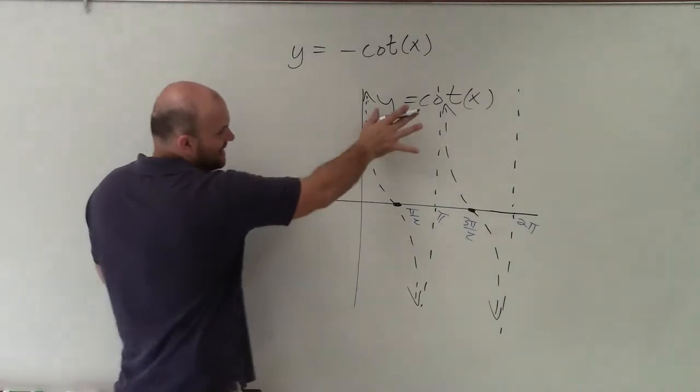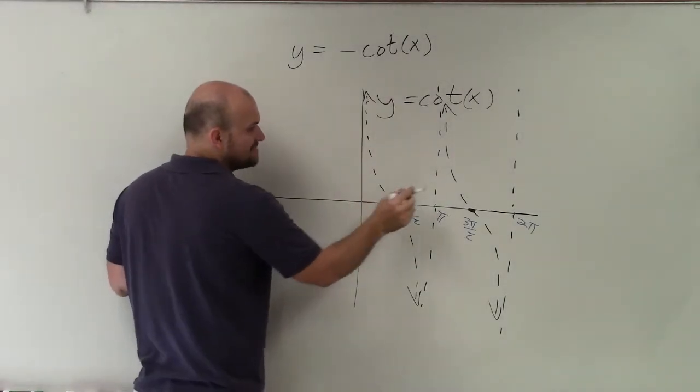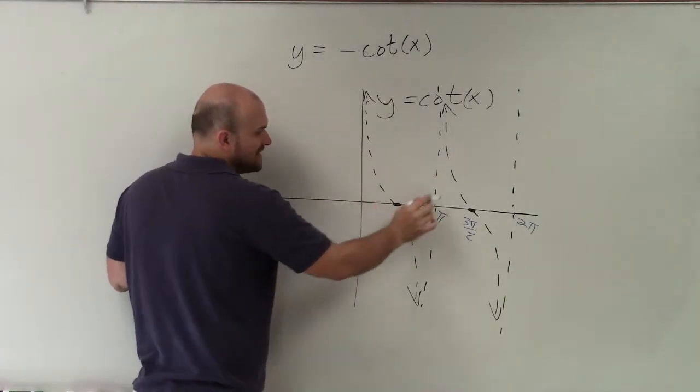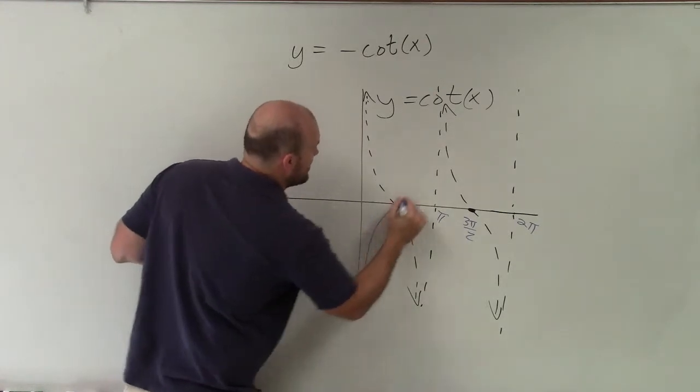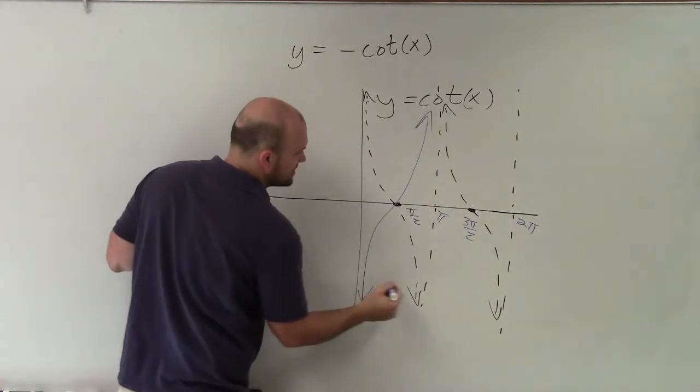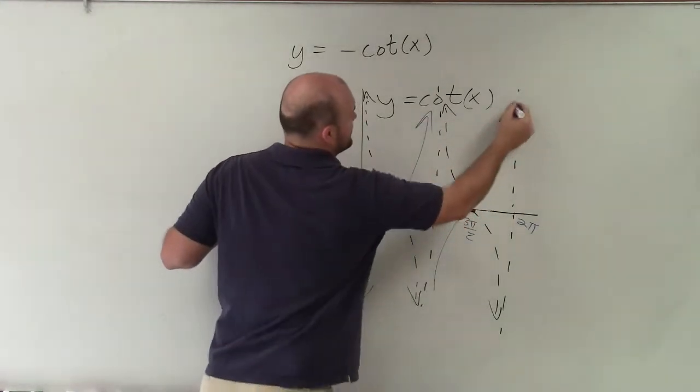So now, if I'm just going to take this graph and flip it over, the intercepts and the asymptotes remain the same. Now my graph kind of looks like a tangent, but just kind of shifted over a little bit.